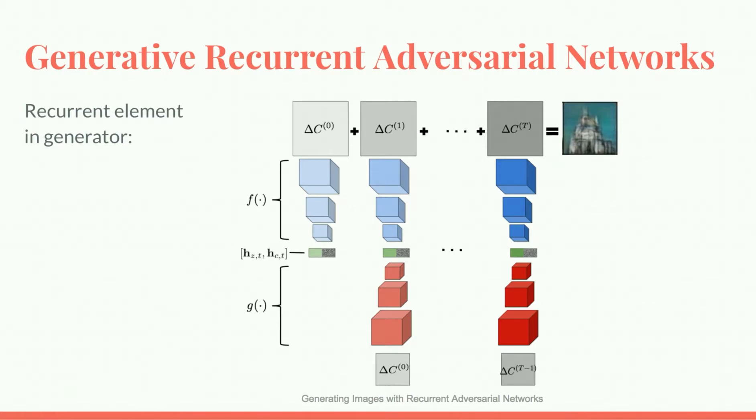Previous approaches to recurrently generating images have taken a more structured approach. One approach, for example, imposes the rule that coarse, high-level features are generated first, and finer details are added iteratively. The GRAN architecture imposes no such rule, instead allowing networks to learn the optimal process. Our implementation uses symmetric three-layer neural networks for both the encoder and decoder.